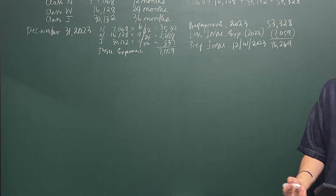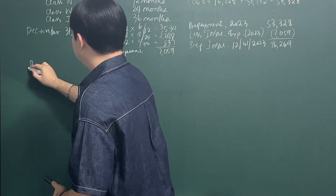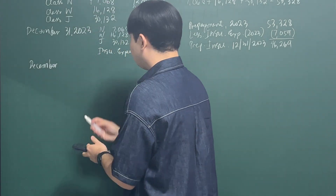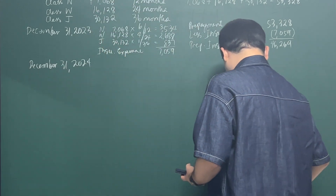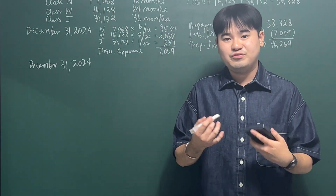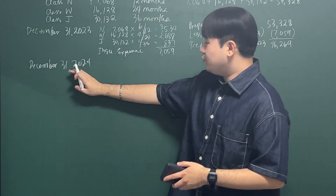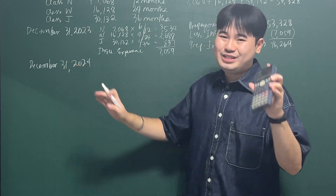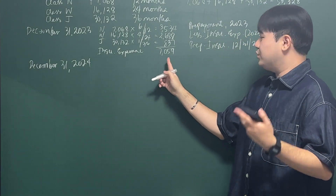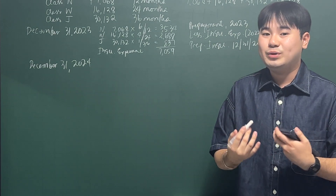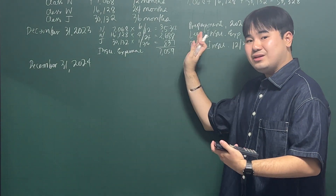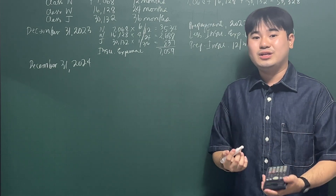Let's now compute the December 31, 2024 amounts. We do the same process — you just need to know the number of months that passed in that specific year. Since we're now in 2024, forget the expense from 2023, because closing entries are done at the end of each accounting period — you've already closed those accounts.